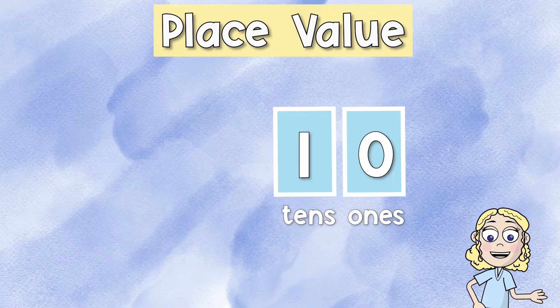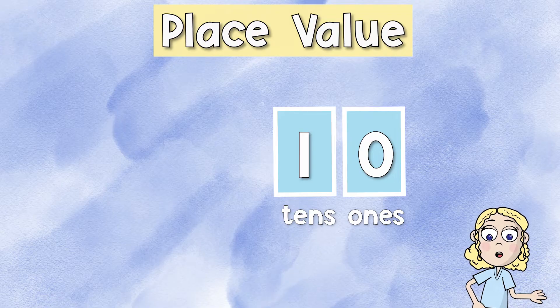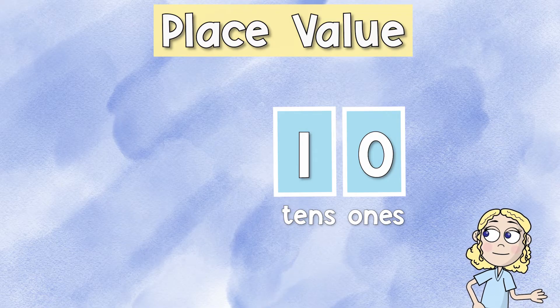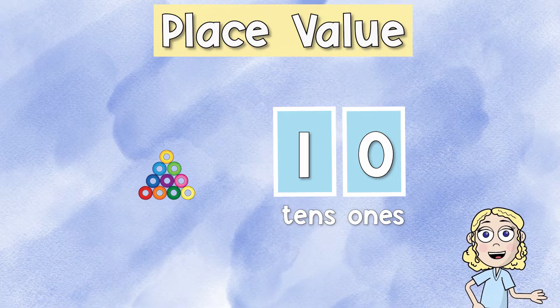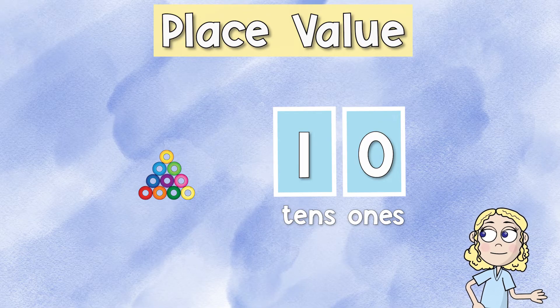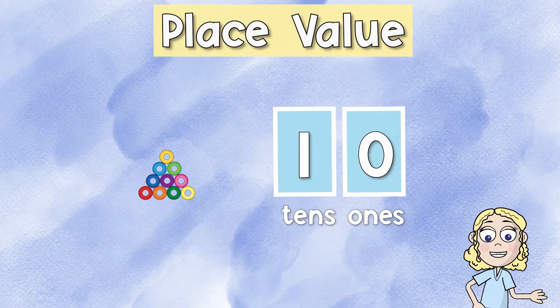This is the tens place. The tens place is going to show us how many groups of 10 we have. So let's pretend this group of 10 is right here. All right, now let's count by tens. So in the tens place, again, we're going to go through each digit.